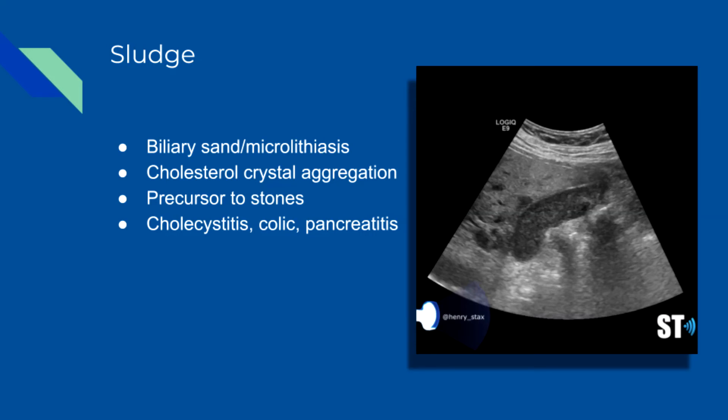Biliary sludge is a very common finding on gallbladder sonography. It is also called biliary sand or microlithiasis. It is mainly comprised of calcium bilirubinate crystals and lesser amounts of cholesterol crystals.